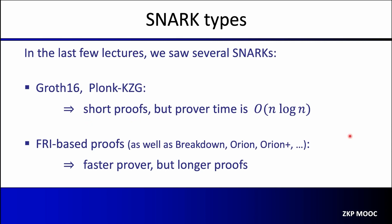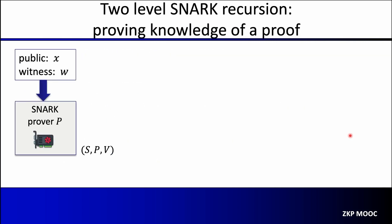To begin to answer that question, let's first look at the general principle of SNARK recursion. What do we mean when we talk about proof recursion? Let's start with a two-level SNARK recursion. Normally when we apply a SNARK, we have a statement X and a witness W and we produce a proof that W is a valid witness for X. In a recursive SNARK, the idea is not to produce the actual proof, but rather to produce a proof of knowledge of a proof.